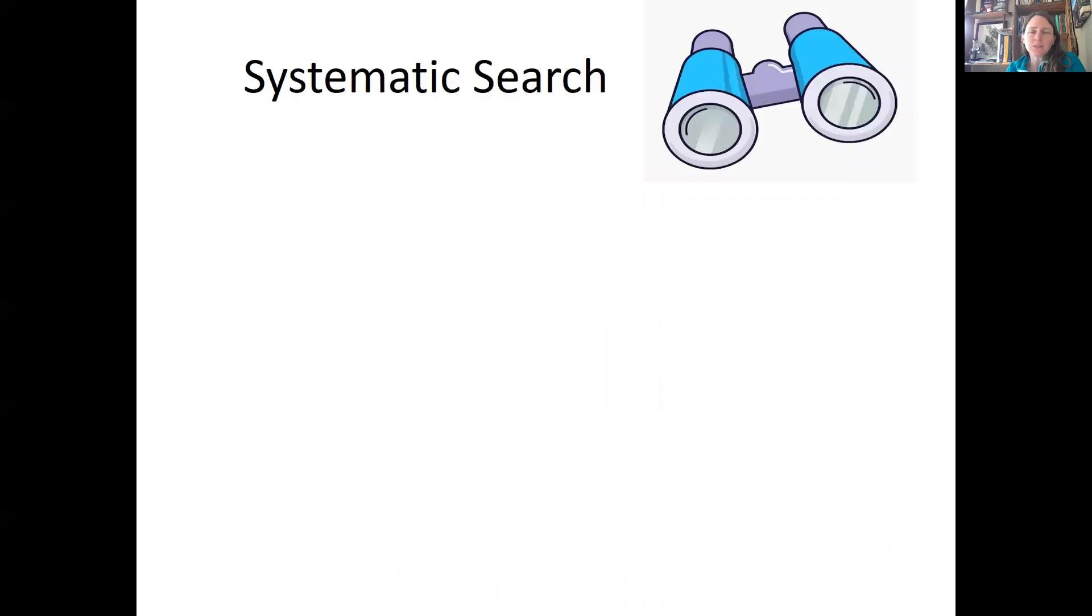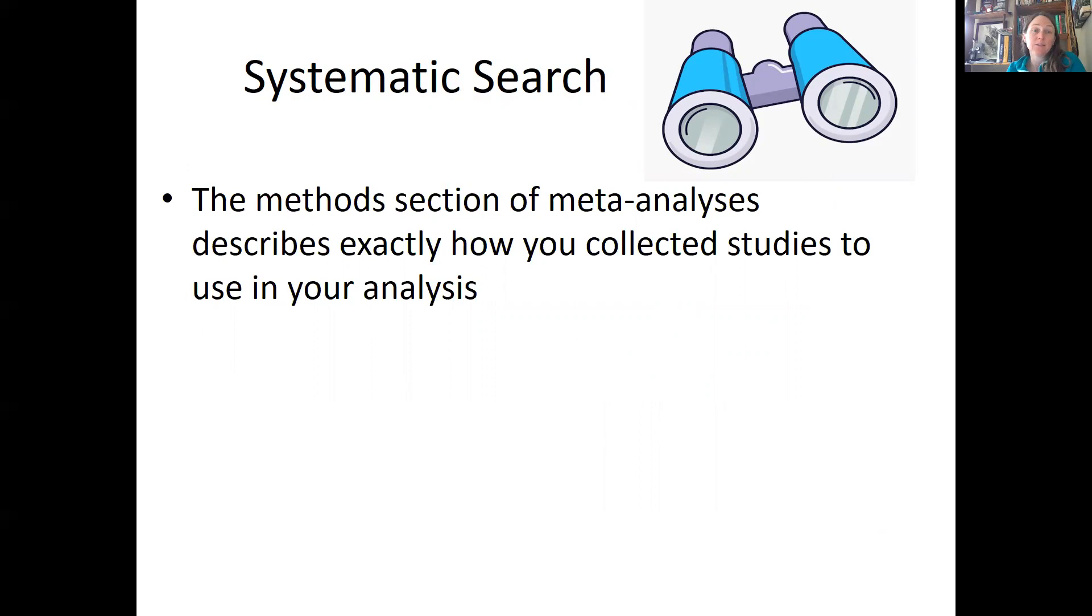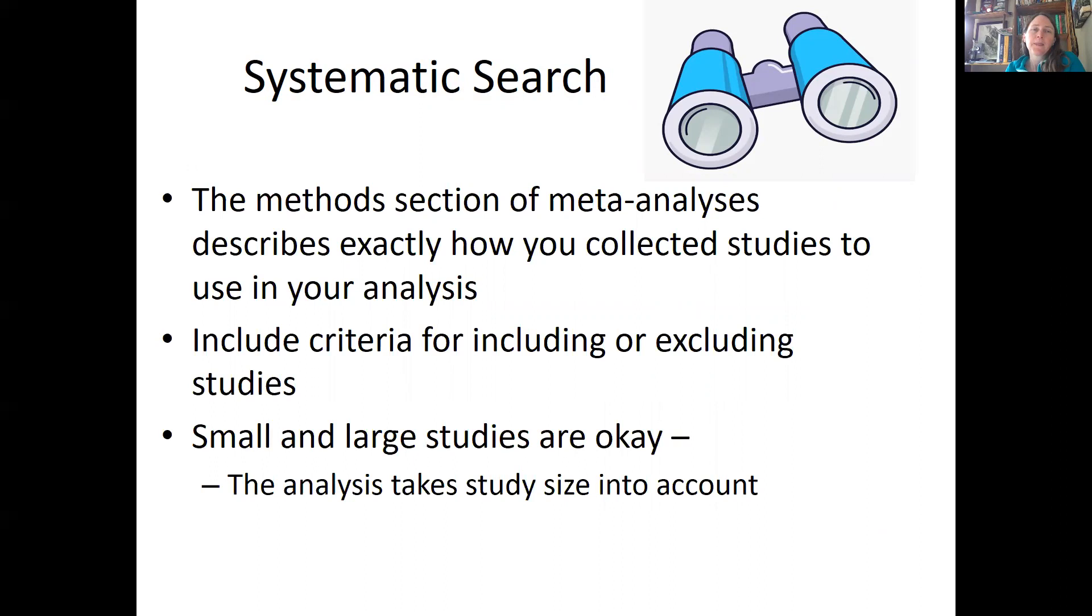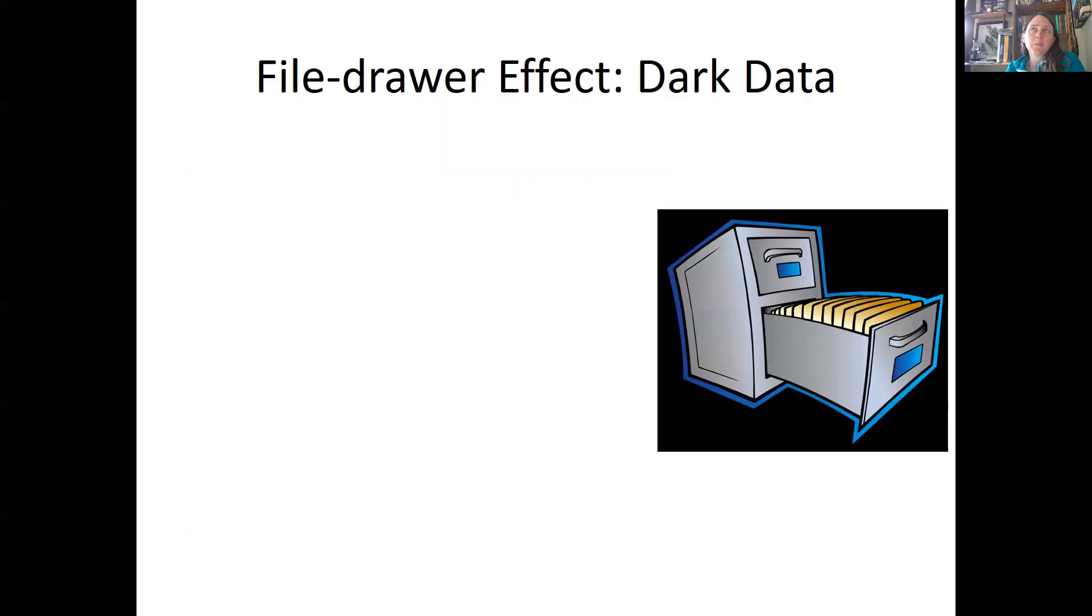So first of all, systematic search. The methods section of your meta-analysis paper would describe exactly how you found the studies that you wanted to include in your analysis. It would include the criteria that used for including or excluding studies. Now, you can include really tiny studies and really big studies. So partly, you can do that because the meta-analysis takes study size into account. The problem with meta-analysis is called the file drawer effect. There's a lot of dark data out there. Dark data is data that haven't been published for whatever reason.